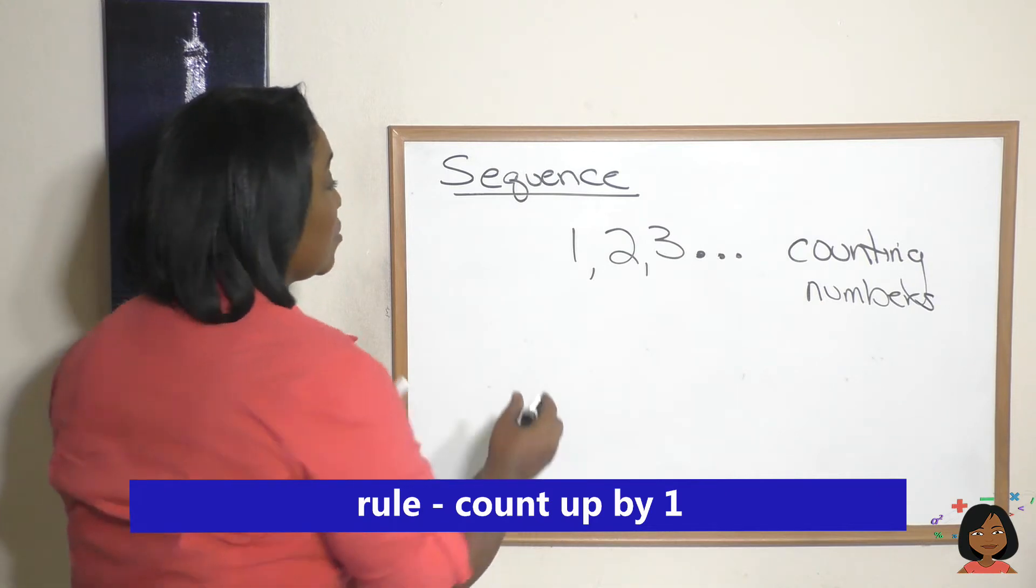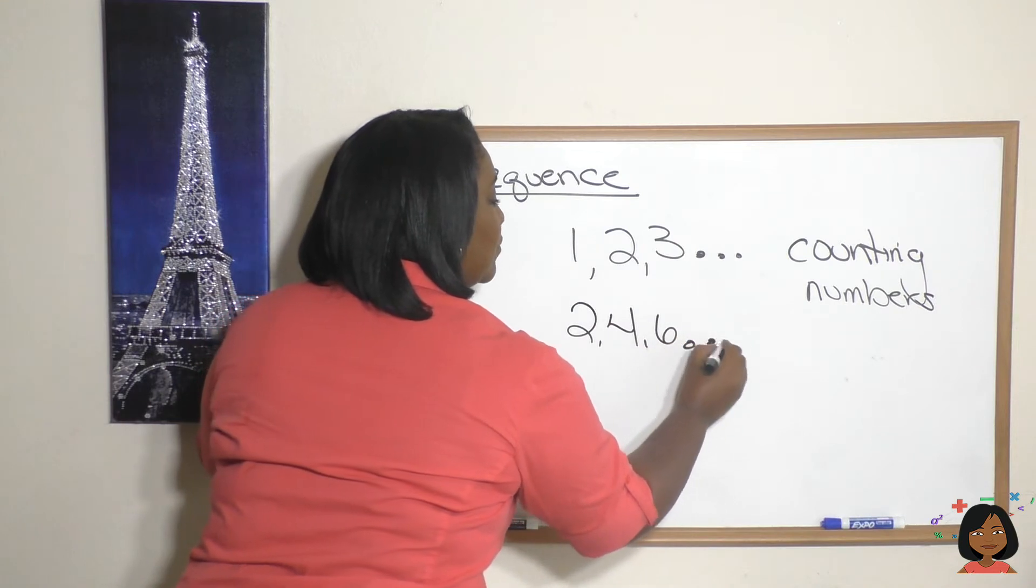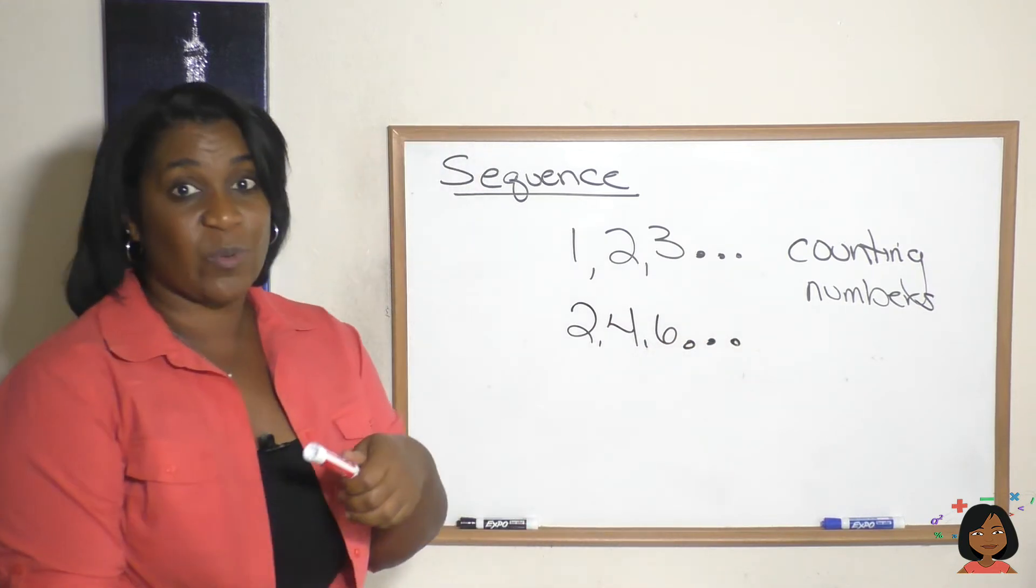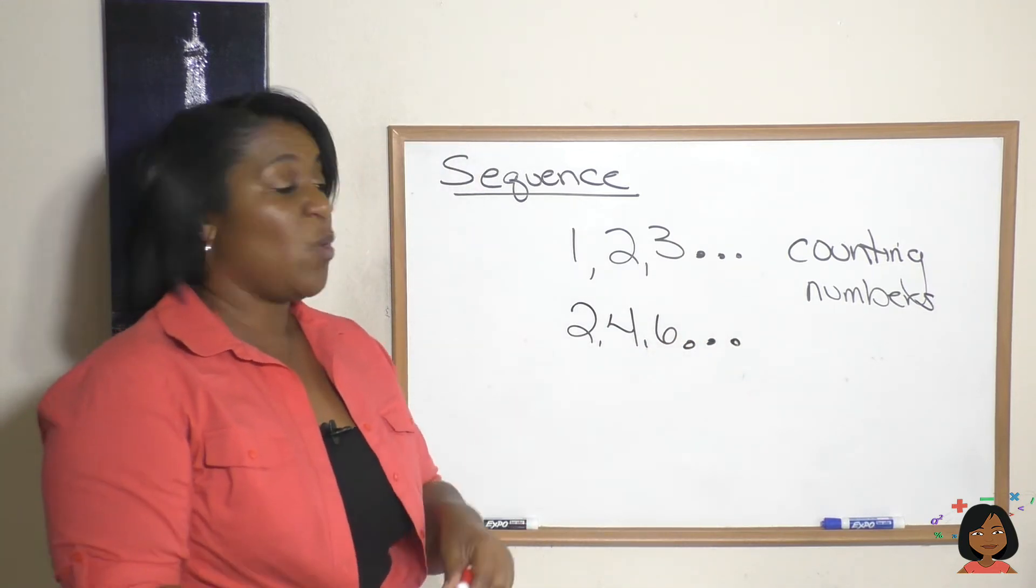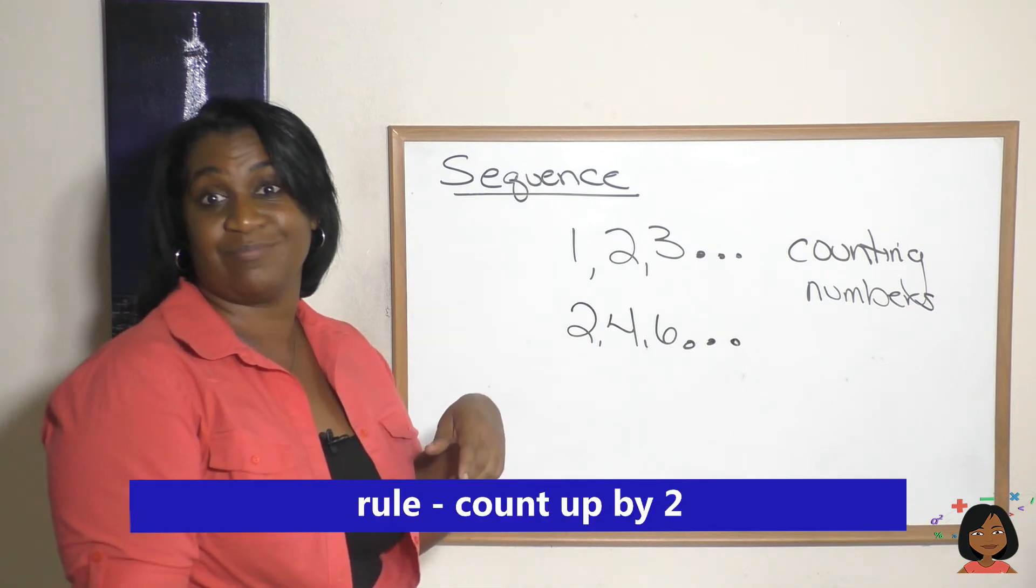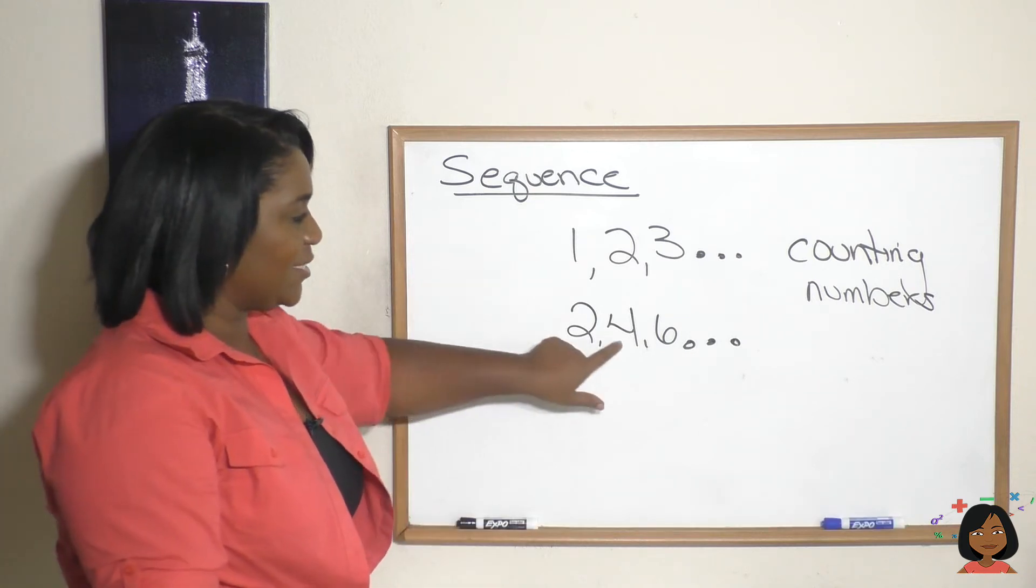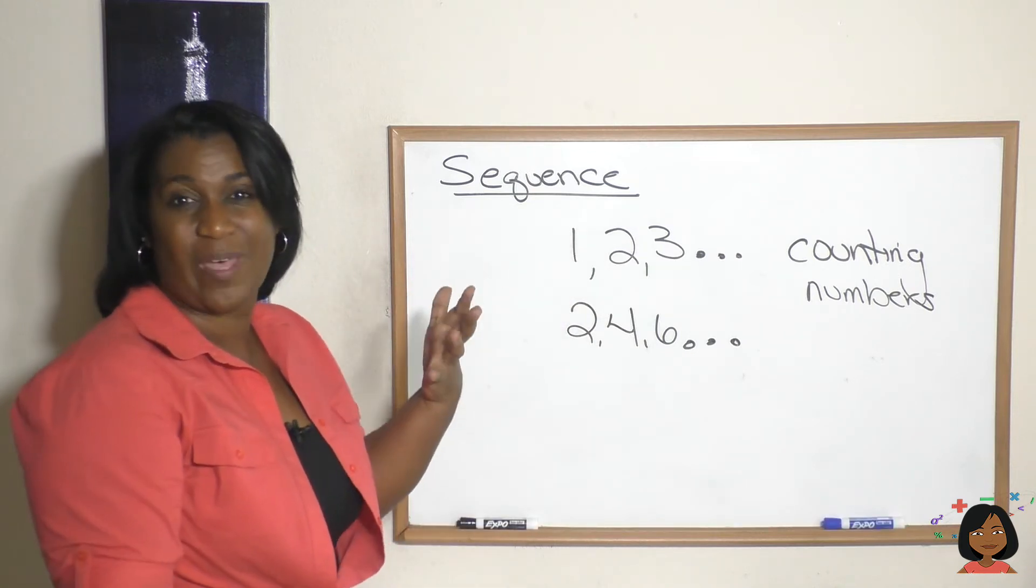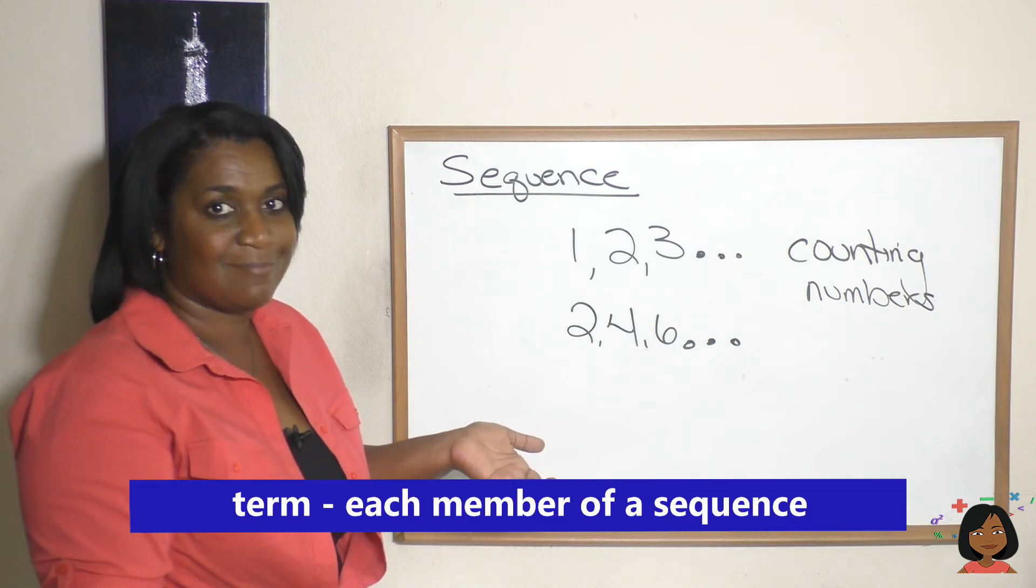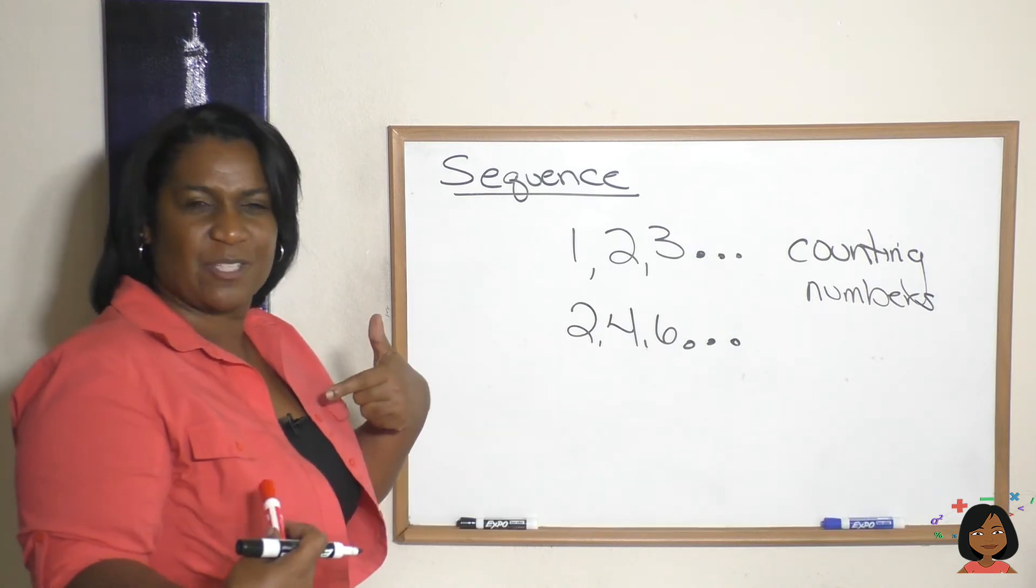Let's write another sequence. What about this one? We have another sequence here. What's the rule? Well, the rule is that we are counting up by two. Let me give you some more definitions. Each of these numbers in my sequence is called a term. Sequences have terms and our job is usually to figure out what's the pattern to the sequence.